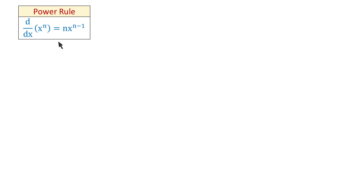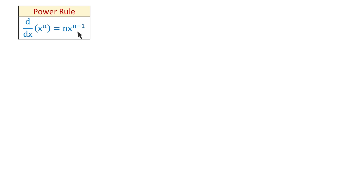Here we have the power rule. The power rule tells us that the derivative of x to the n-th power equals n times x to the n minus 1. So if we have a variable x raised to an exponent that is a number, to find the derivative we move this exponent in front and decrease the exponent by 1.